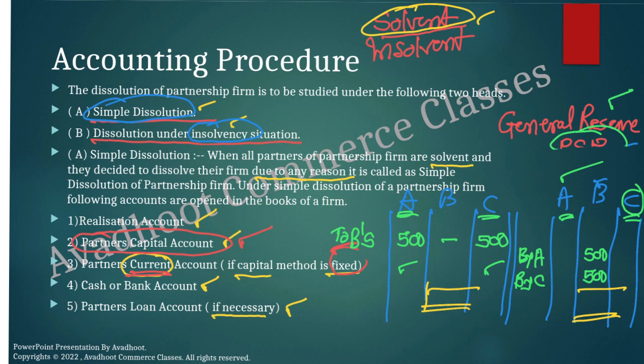If a loan account of a partner is opened separately, no entry is needed for that transfer. But if the partner's loan account balance is transferred to the realization account, the entry will be: creditors account debit, bills payable account debit, bank overdraft debit, bank loan account debit, B's loan account debit — to realization account total. If you have opened B's loan account separately and are transferring the balance, don't make that journal entry. Another entry: realization account debit to all assets accounts — plant and machinery, debtors, land and building, furniture, patents, stock — whatever assets are transferred.